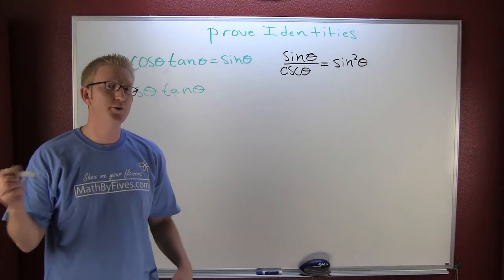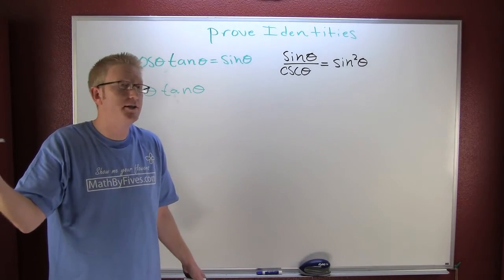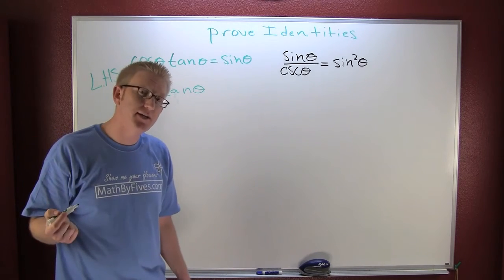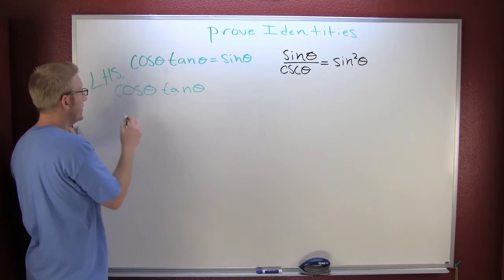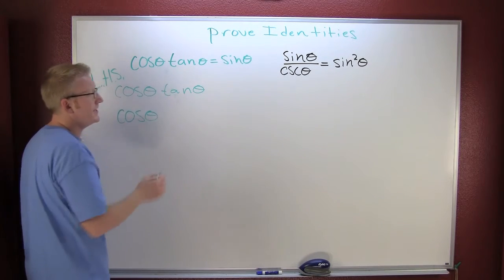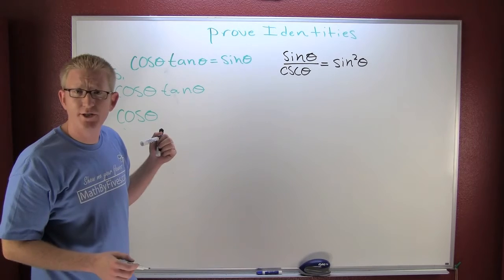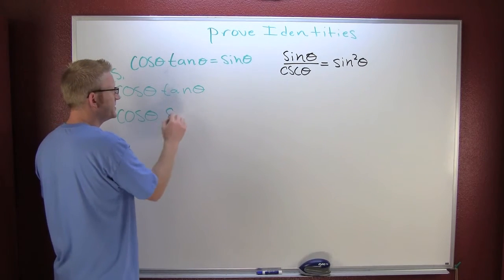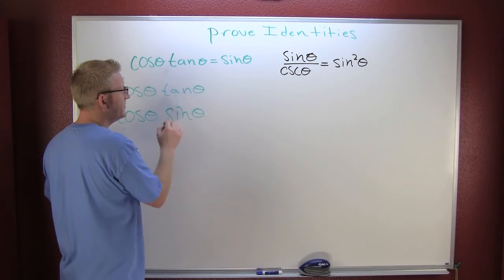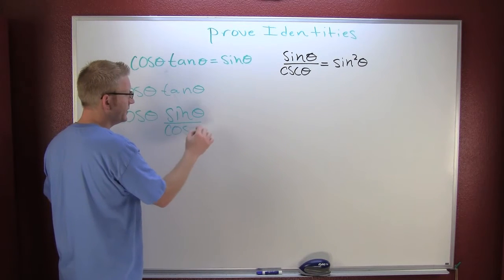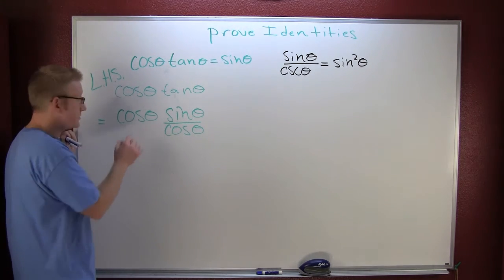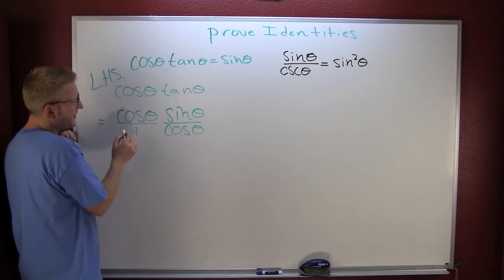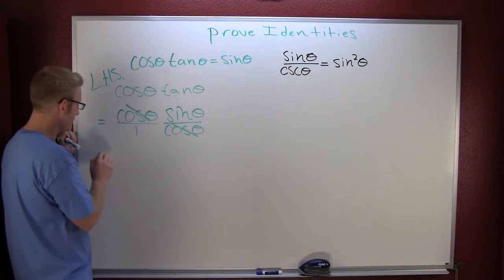Here I'm in a bit of a pickle. I'm not really sure what to do. Whenever you're unsure what to do, one strategy is to change everything to sines and cosines. My cosine is already a cosine. My tangent, however, I can use my ratio identity. That's sine of theta divided by the cosine of theta.